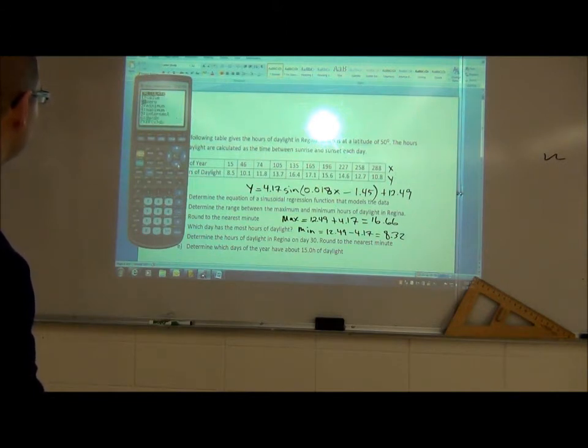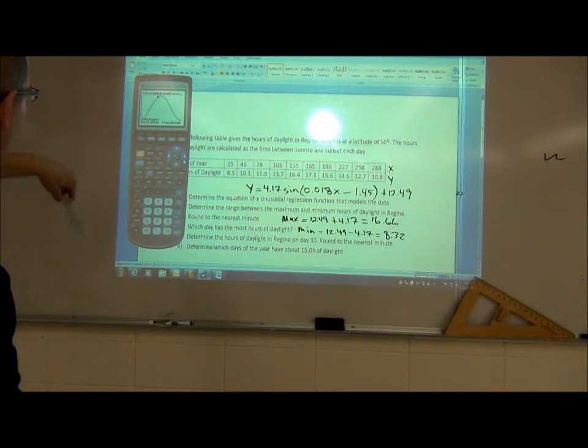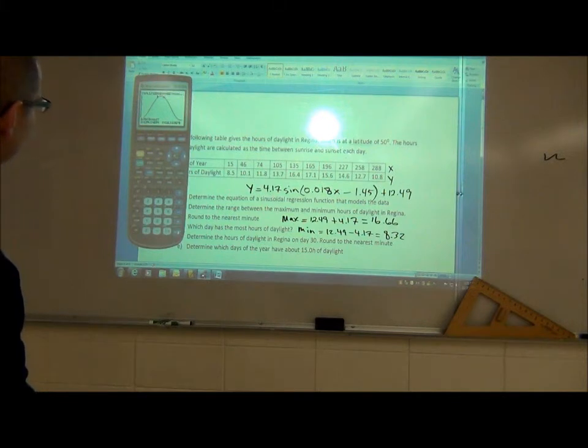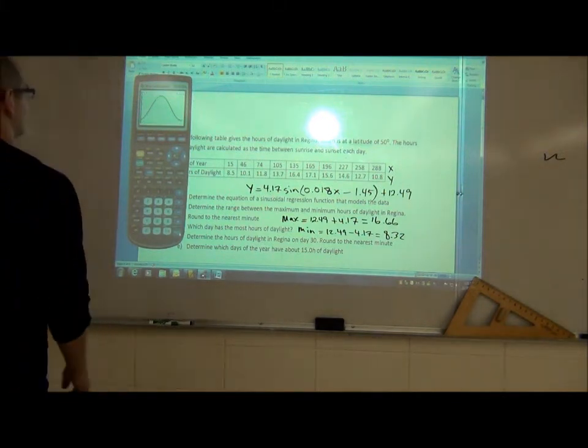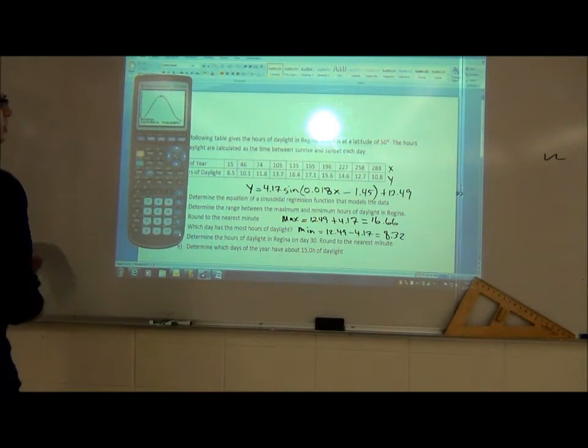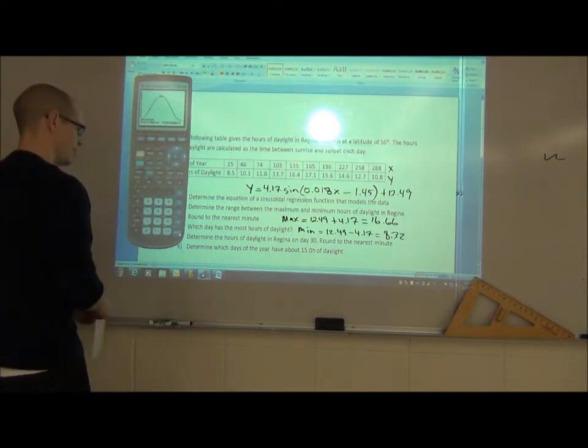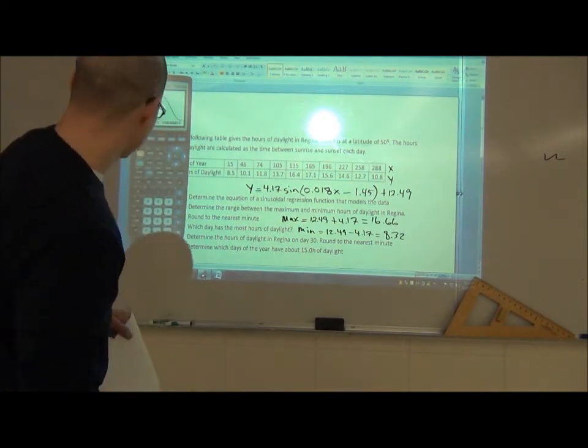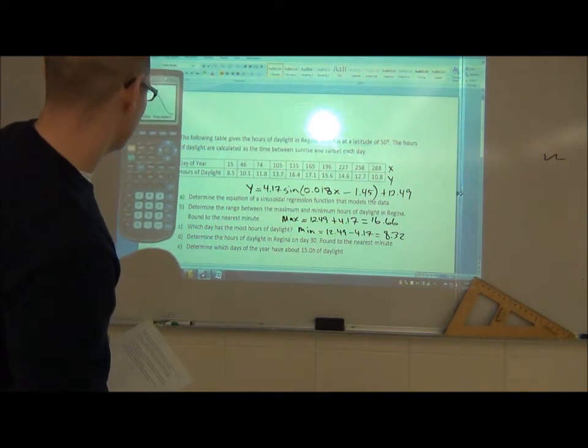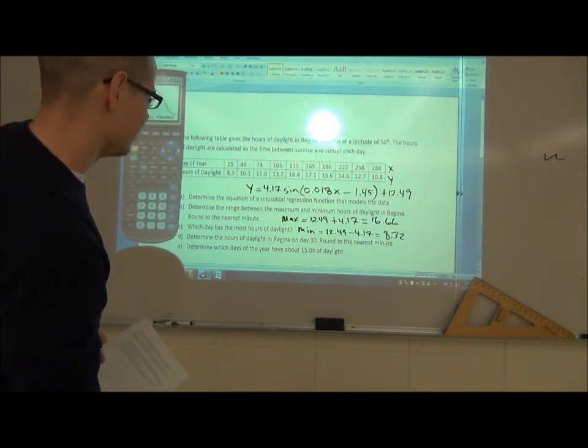So here's what you do. You go to your graph. We want that point right at the top there, that's the highest point. So go second trace, down to maximum. Go left bound. See where it says left down? I'm going to the left of the point. Hit enter. Go over to the right of the point. Hit enter again. Enter one more time. It'll tell me eventually. Okay, so the maximum point is at 170.91 and 16.65.